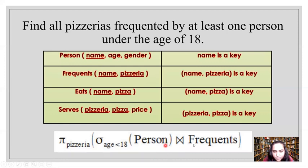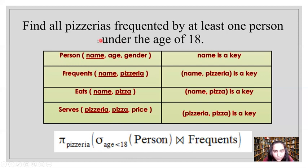We have two tables: person and frequent. From person, we first find all rows with age less than 18 using the sigma select operation: σ(age < 18)(person). We then take a natural join with frequent, keeping only those people under 18 who visit some pizzeria because their names match in the frequent table. Finally, we apply π(pizzeria) to retain only the pizzeria column. This is what the query looks like.